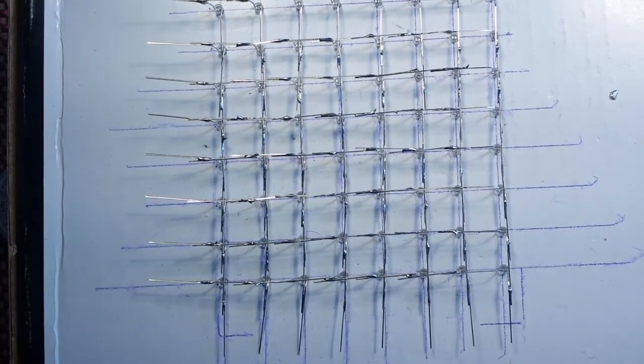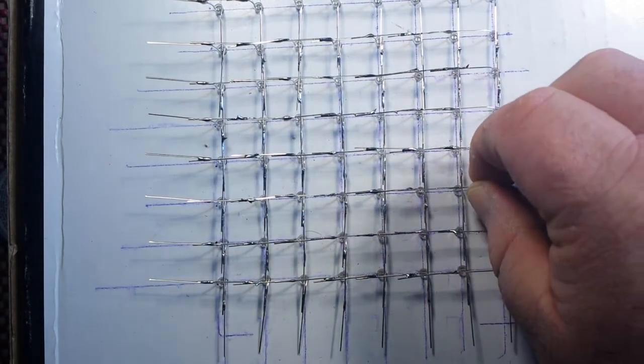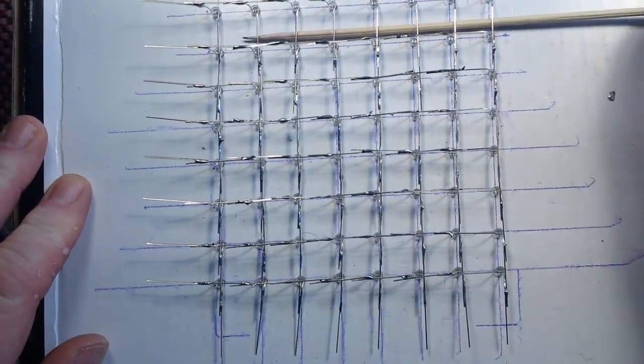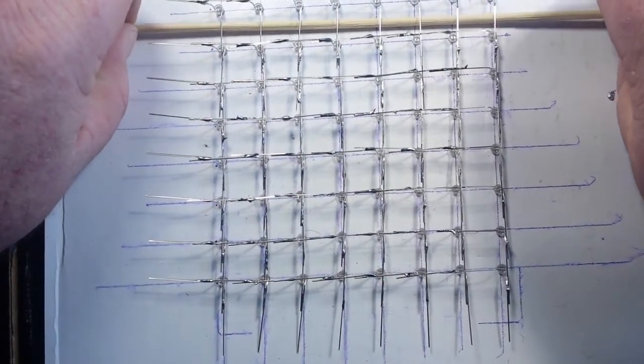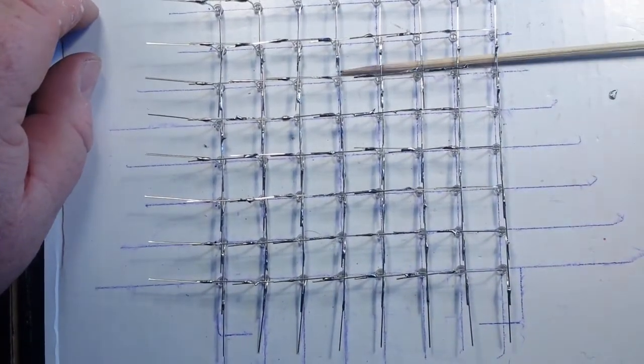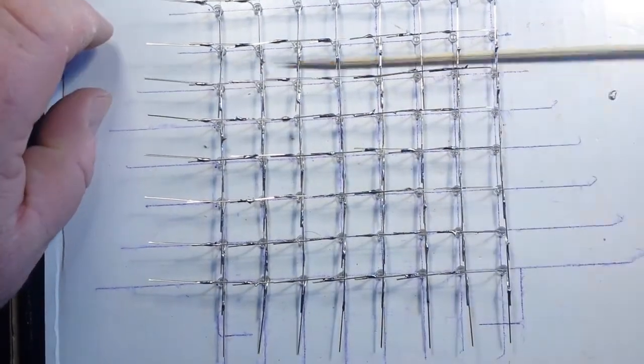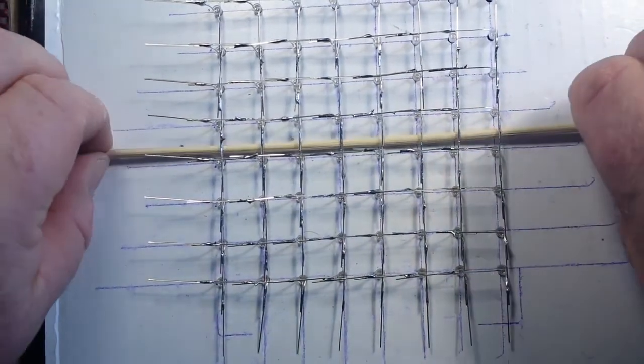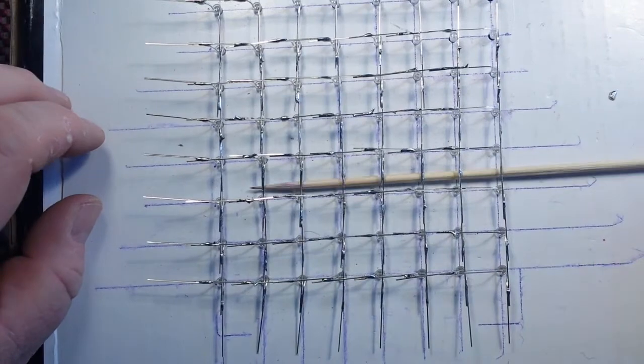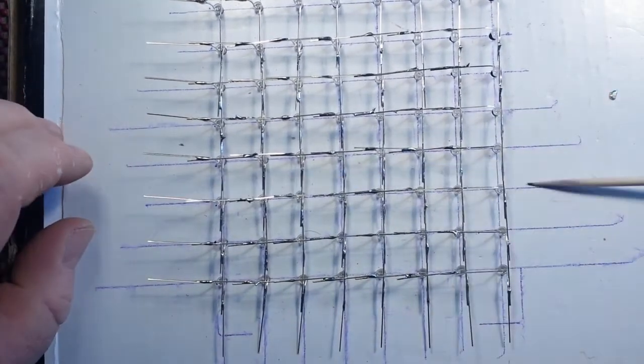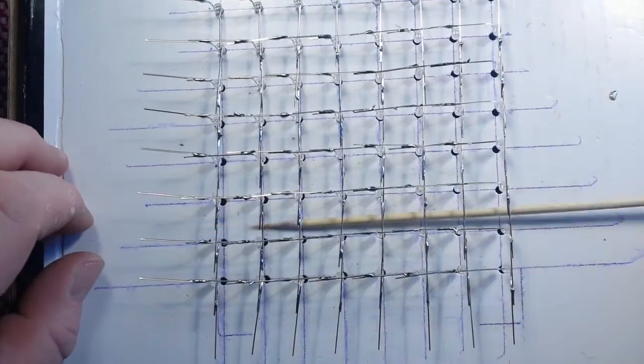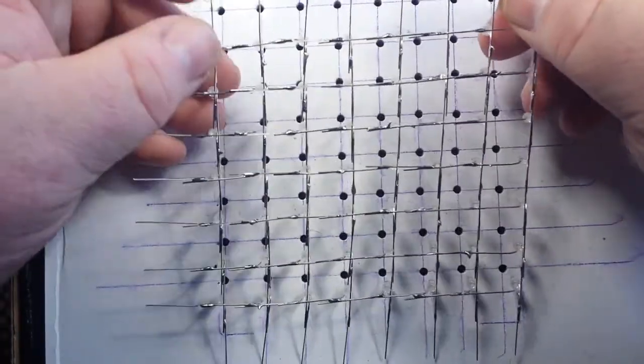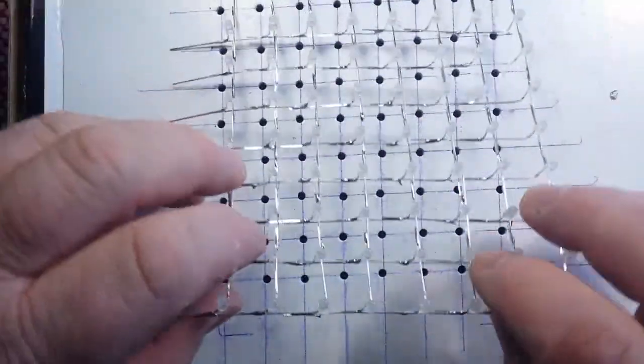Everything is all soldered up. Now you got to be careful when you remove this from the jig. Here's how I like to do it: kind of go row by row here, apply a little pressure, and voila, it's free.